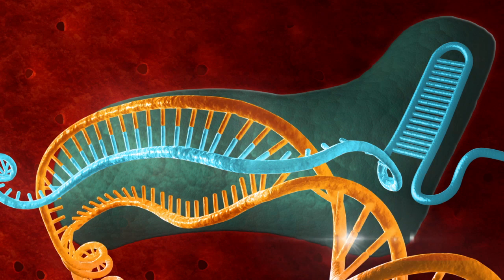While bacterial Cas9 is capable of introducing double strand breaks, a modified version introduces only single strand nicks to the DNA, which can be exploited to reduce the off-target cuts sometimes seen using the wild type Cas9.